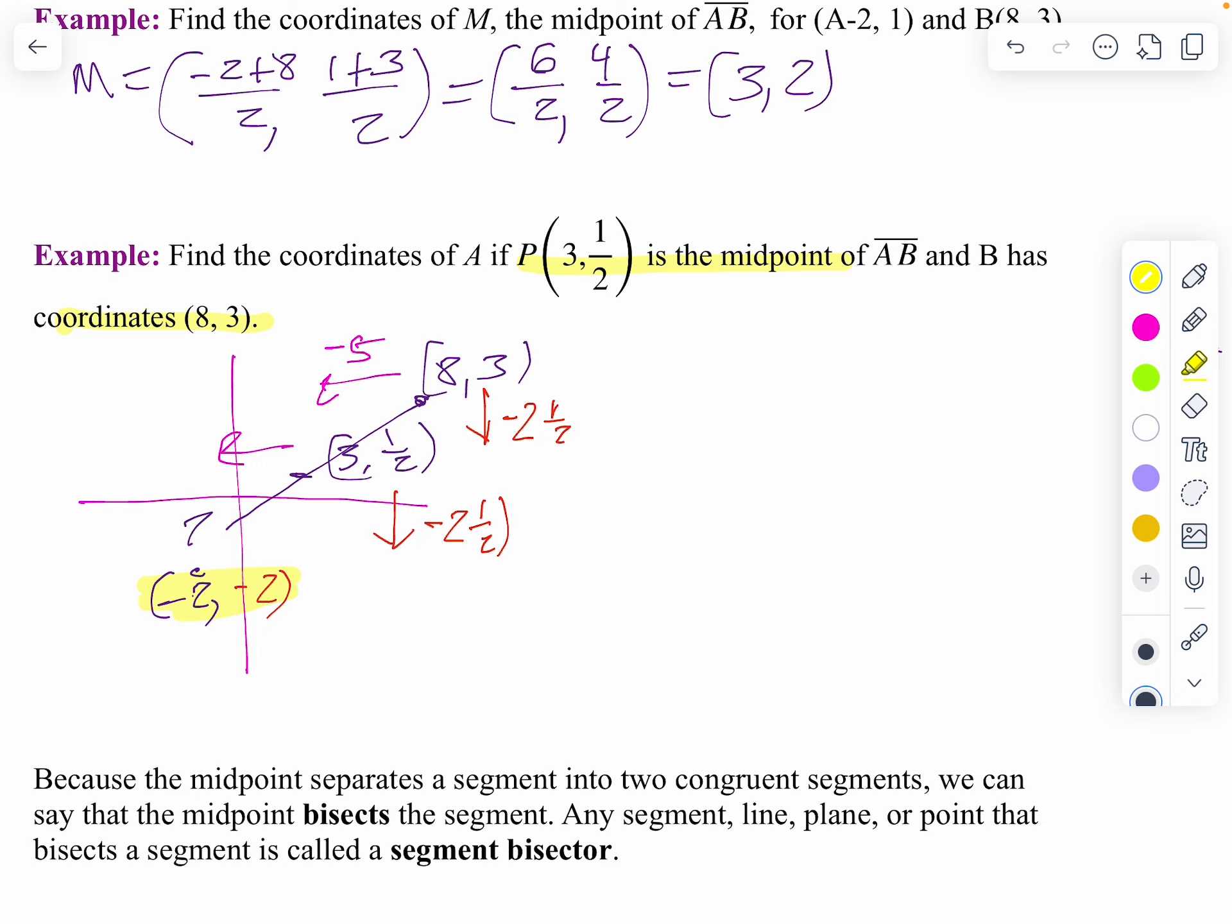Now, how can I do that algebraically? Well, I could set up my coordinates and I'll just work backwards. So what I'm saying is, I know my answer is 3, 1 half. To find that, I add up my endpoints, my x. This will be x plus 8 over 2. And 3 plus y over 2. Now, we're just going to separate them out.